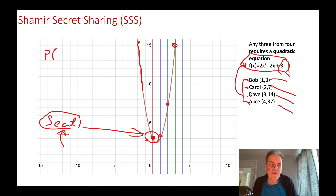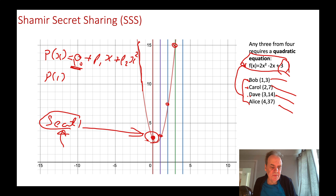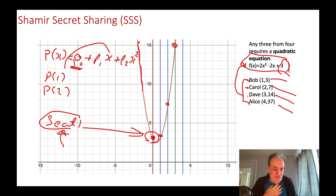In general, the polynomial is P(x) = P₀ + P₁x + P₂x² + … where P₀ is the secret. The first share is obtained by substituting x=1 into the polynomial to get P(1), the second share is P(2), and so on. When we recover the polynomial, we take the first coefficient P₀ and we have our secret back. It's a really magical scheme and it works extremely well.